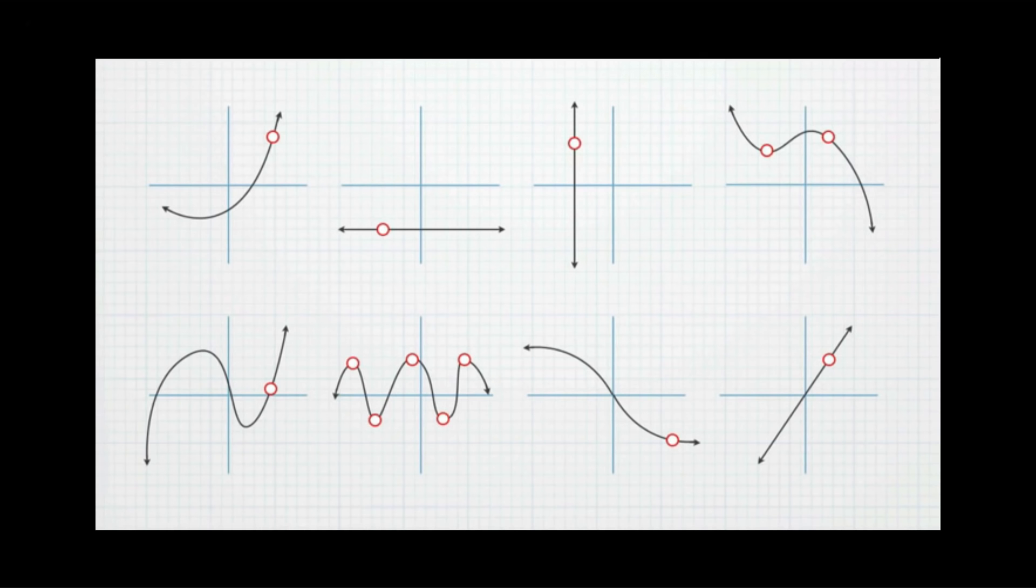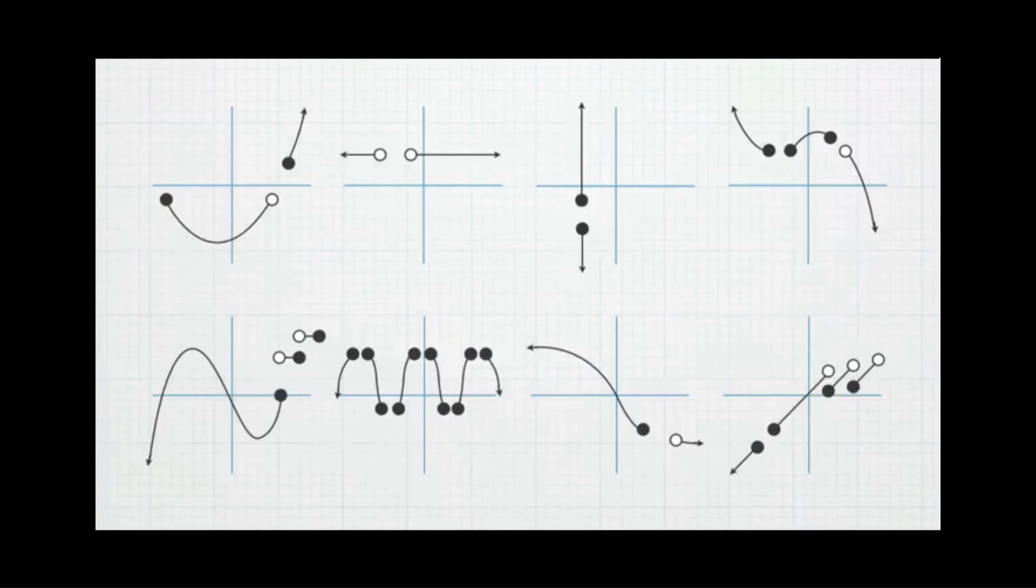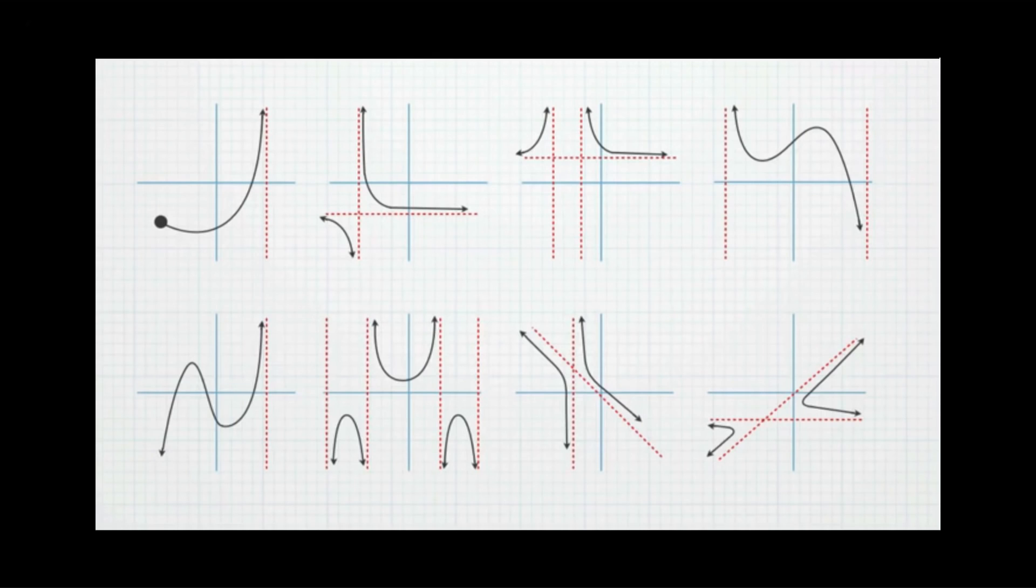These are all examples of point discontinuities. These are all examples of jump discontinuities. And these all look like examples of infinite discontinuities, except that this one, this one, and this one are not discontinuous because they don't have two separate sections of the curve that are broken up by an asymptote.